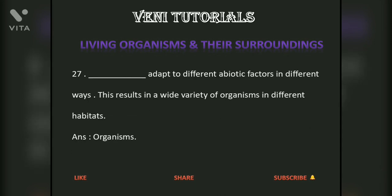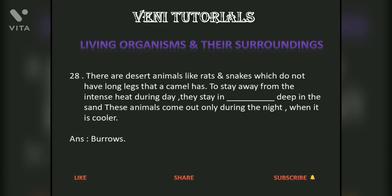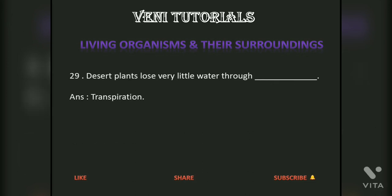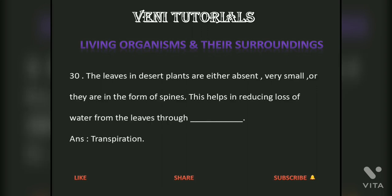Organisms adapt to different abiotic factors in different ways. This results in a wide variety of organisms in different habitats. There are desert animals like rats and snakes which do not have long legs like a camel. To stay away from the intense heat during the day, they stay in burrows deep in the sand. These animals come out only during the night when it is cooler. Answer: Burrows. Desert plants lose very little water through transpiration. The leaves in desert plants are either absent, very small, or in the form of spines. This helps in reducing loss of water from the leaves through transpiration. Answer: Transpiration.